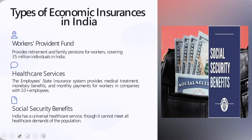When looking into types of economic insurances under social insurance, the first one is the Workers Provident Fund. It provides retirement and family pensions for workers, covering almost 35 million individuals. The PF secures a social fabric and gives a social net for individuals. In the Indian population, only around 35 million individuals have access to legislated public protection nets in the form of old age income security, which is quite alarming.